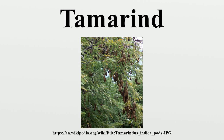The fruit has a fleshy, juicy, acidulous pulp. It is mature when the flesh is colored brown or reddish-brown. The tamarinds of Asia have longer pods containing 6 to 12 seeds, whereas African and West Indian varieties have short pods containing 1 to 6 seeds. The seeds are somewhat flattened and glossy brown. The tamarind is best described as sweet and sour in taste, and is high in tartaric acid, sugar, B vitamins and, oddly for a fruit, calcium. As a tropical species, it is frost-sensitive.